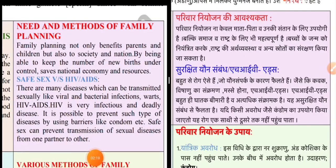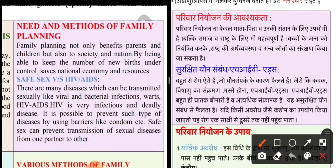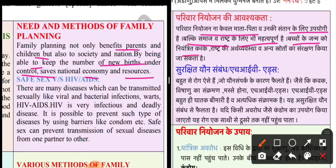Now we will discuss about the need and methods of family planning. Pariwar niyojan ki avashyakta kyun hai? Family planning not only benefits the parents and children, but also society and nation. By being able to keep the number of births under control, it saves the national economy and resources. Pariwar niyojan bachon ke naa keval maata, pita aur santaan ke liye upyogi hota hai, balki samaj aur raashtra sabhi ke liye mahatvapoorn hai. Aur bacho ke janm ko niyantrit karke raashtra ki arthvyavastha aur anya sansadhano ka sanrakshan bhi kiya ja sakta hai.